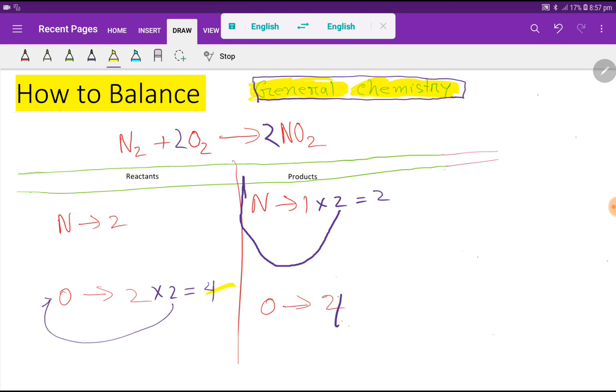Oxygen 4, 4. Then nitrogen 2, 2. So everything is balanced. So you can say that this is the balanced reaction.